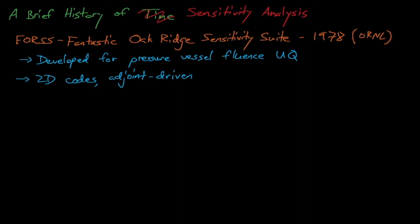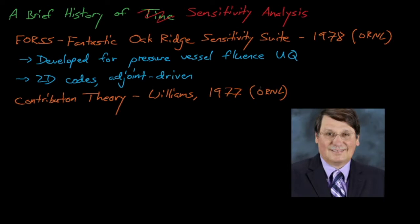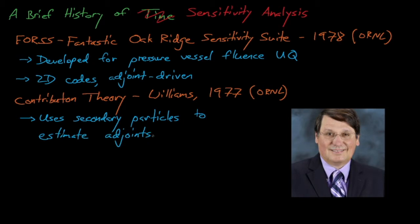Around the time FORES was released, a scientist by the name of Mark Williams at Oak Ridge developed another way for estimating adjoints. Dr. Williams' method, which he dubbed Contributon theory — not Contribution theory, but Contributon theory — provides the theoretical framework for estimating adjoint fluxes by simulating secondary particles in an imaginary universe in parallel with events in the main Monte Carlo simulation. The code would track what these secondary particles did and how many fissions they induced, which allowed the code to estimate the importance of the event that spawned these secondary particles.